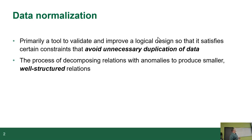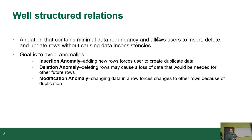Normalization is a tool — a process that you use to satisfy specific constraints. We're going to be going through what the constraints are to avoid unnecessary duplication of data. The whole process decomposes relations — entities and attributes and all that kind of stuff that have anomalies — to produce smaller, well-structured relations. A well-structured table contains minimal data redundancy, which allows you to insert, update, and delete without causing any kinds of inconsistencies.